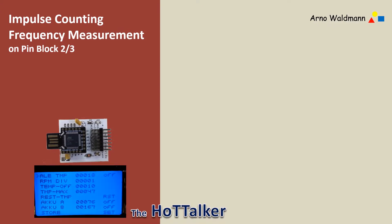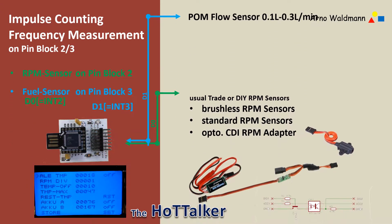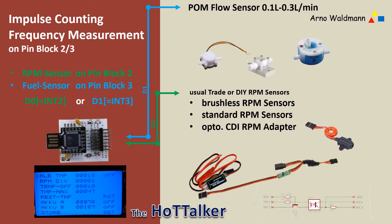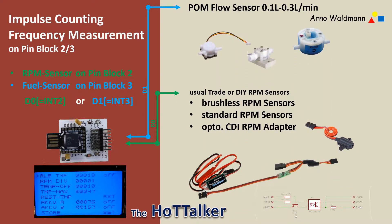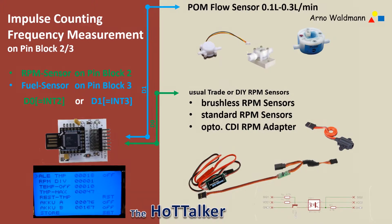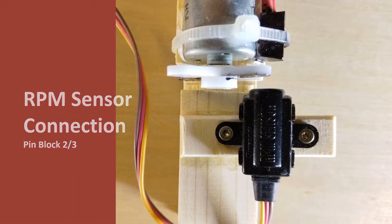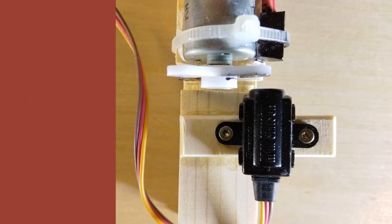Here is a small overview of all impulse-driven sensors that have been used on the Hot Talker so far. Above are the flow sensors made of polyoxymethylene, and below are different RPM sensors. The short video shows the usage of an RPM sensor. The sensor used in this video is an optical Graupner sensor, which is also the one used most.